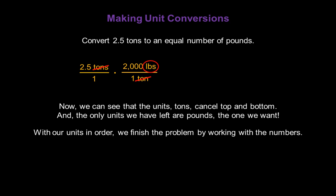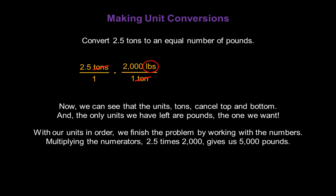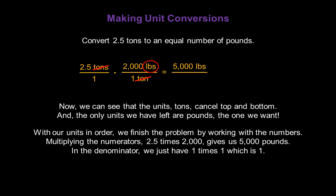With our units in order, we can finish the problem by working with the numbers. Multiplying the numerators, 2 and a half times 2,000 gives us 5,000, and pounds are in the numerator. In the denominator, we just have 1 times 1, which is 1. So, 2 and a half tons is the same as 5,000 pounds.